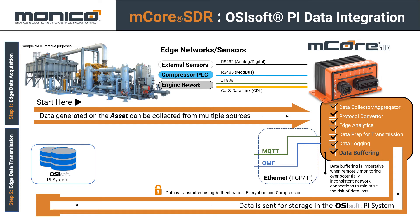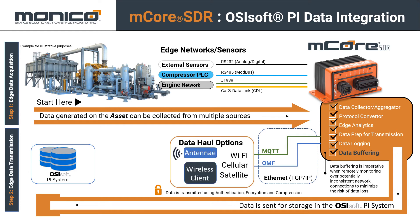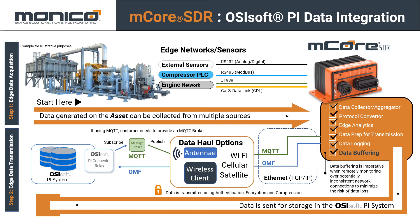Using MQTT or OMF, data is transmitted over an Ethernet connection via TCP/IP — either Wi-Fi, cellular, or satellite. If using MQTT, data is published to an MQTT message broker, and an OSI SoftPi connector relay subscribes to that broker to get data into the OSI SoftPi system. Alternatively, OMF can push data directly to the Pi connector relay. All transmitted data uses authentication, encryption, and compression.